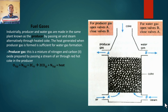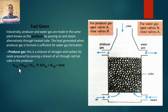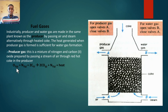Producer gas is a mixture of nitrogen and carbon monoxide. The chemical equation is important to know. The oxygen and nitrogen here come from air — remember, air is made up mainly of oxygen and nitrogen, with nitrogen at about 78% and oxygen at about 21%. This air is passed through red-hot coke, producing carbon monoxide and nitrogen. A mixture of carbon monoxide and nitrogen in a 2:1 ratio is referred to as producer gas.